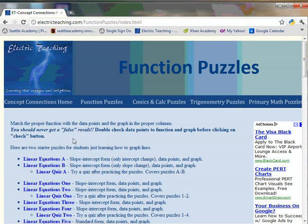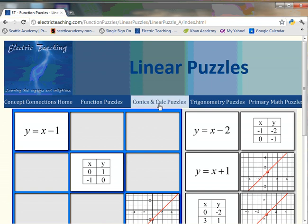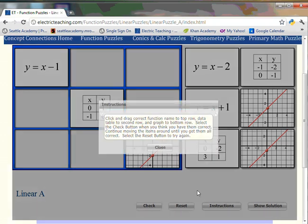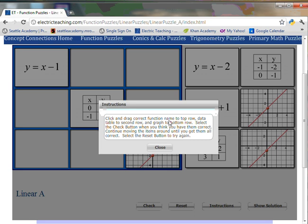As the hint says up here, we really don't want to see a false result as we get better with this. We want to double check the data points before clicking the check button. This is the basic window. It's a flash object, which means it won't work on iPad, but pretty much everything else will run it.